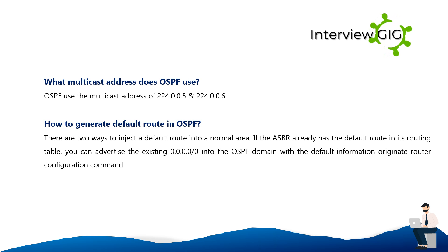OSPF uses the multicast addresses 224.0.0.5 and 224.0.0.6. To generate a default route in OSPF, there are two ways to inject a default route into a normal area. If the ASBR already has the default route in its routing table, you can advertise the existing 0.0.0.0/0 into the OSPF domain with the 'default-information originate' router configuration command.